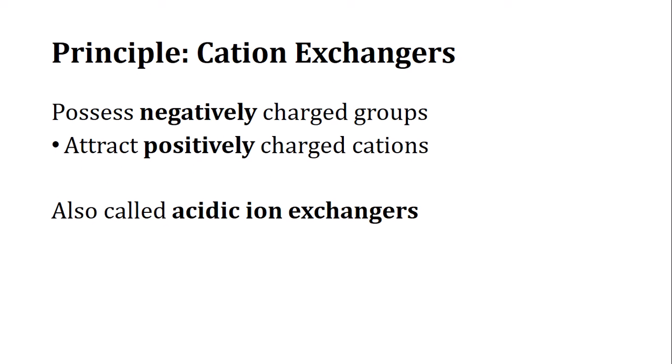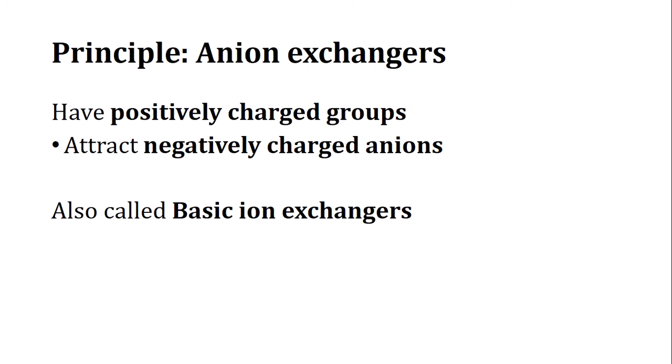Acetate ions, for example, are negatively charged. Anion exchangers have positively charged groups and attract negatively charged ions or anions; these are called basic ion exchangers. A positive charge on an ion reflects basicity. For example, in an ammonium buffer such as NH4OH and NH4Cl, the buffer property is governed by the positive ammonium ion.